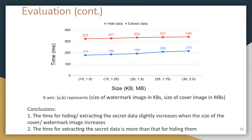We also calculated processing time with different sizes of cover image and watermark. The x-axis represents size — for example, 10-1 means a 10 KB watermark and a 1 MB cover image. Two conclusions: processing time increases with the size of cover image and watermark because larger images require more space and time; and the time to extract secret data is greater than to hide it, for the same reason as before.